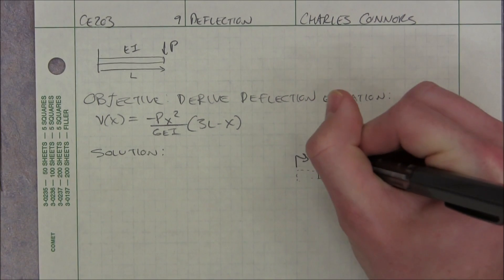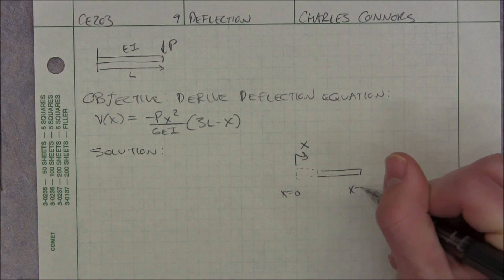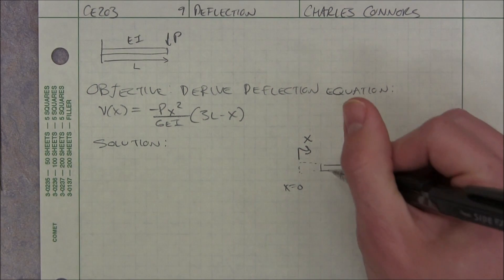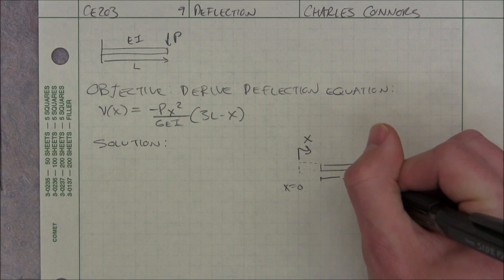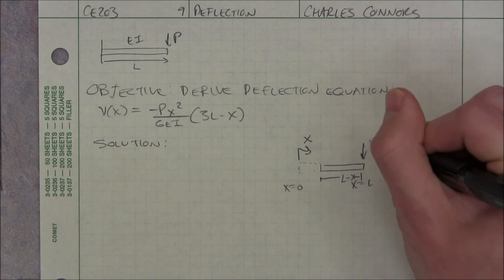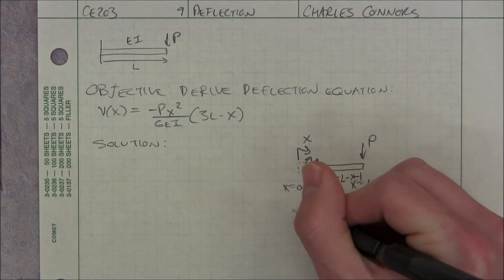Alright, we're measuring x from this side, so this is x equals zero and x equals L. You can switch it however you want as long as your formula is consistent with your limits, you're fine. So that means this distance would be the length minus x. We have our load here and we want to know our M of x.